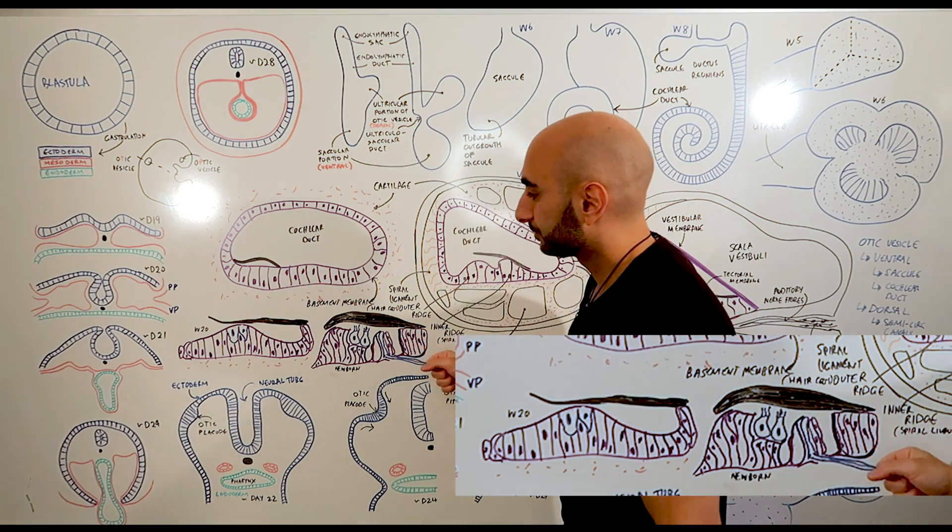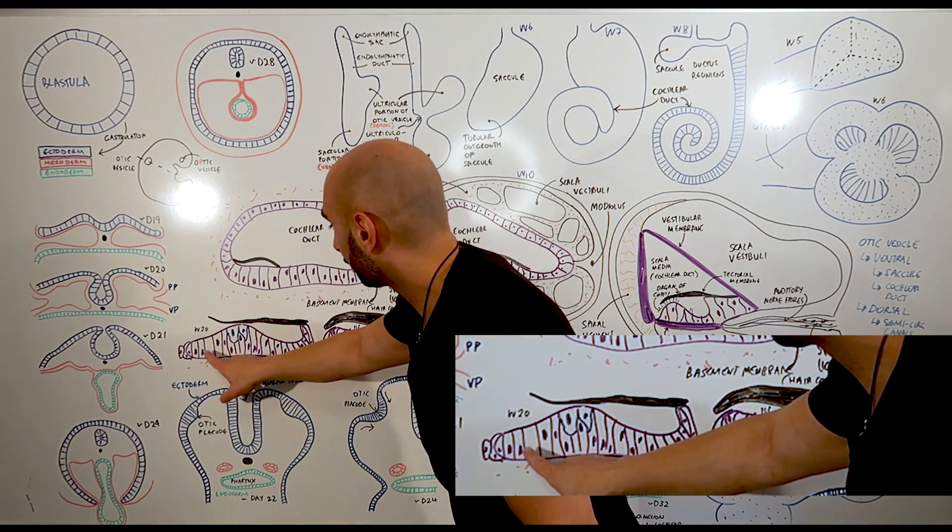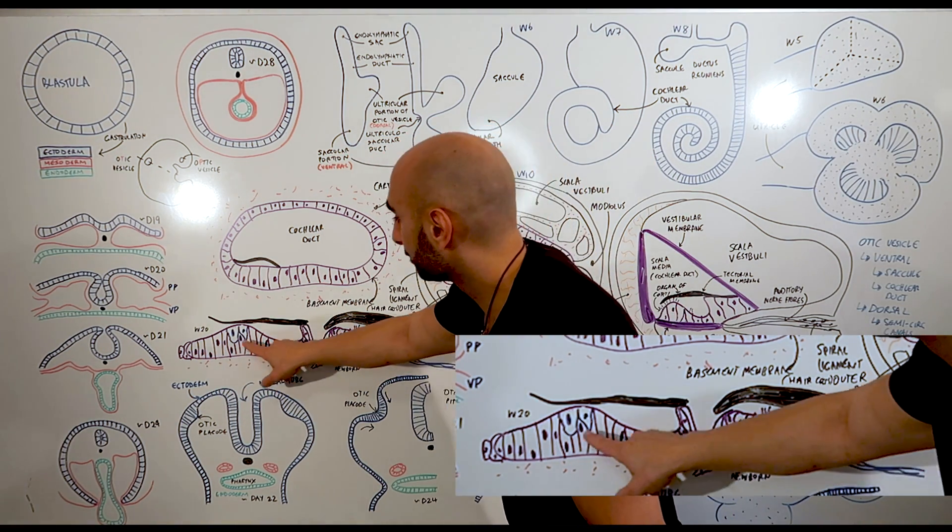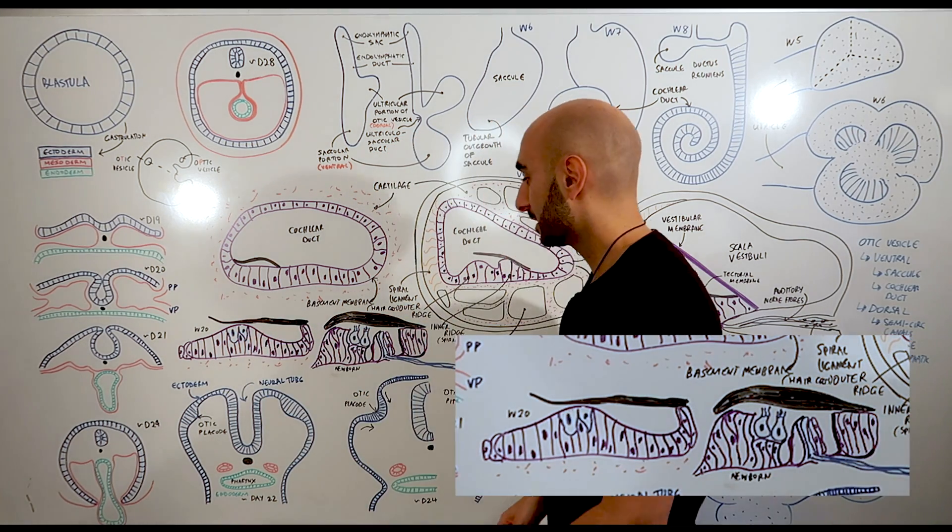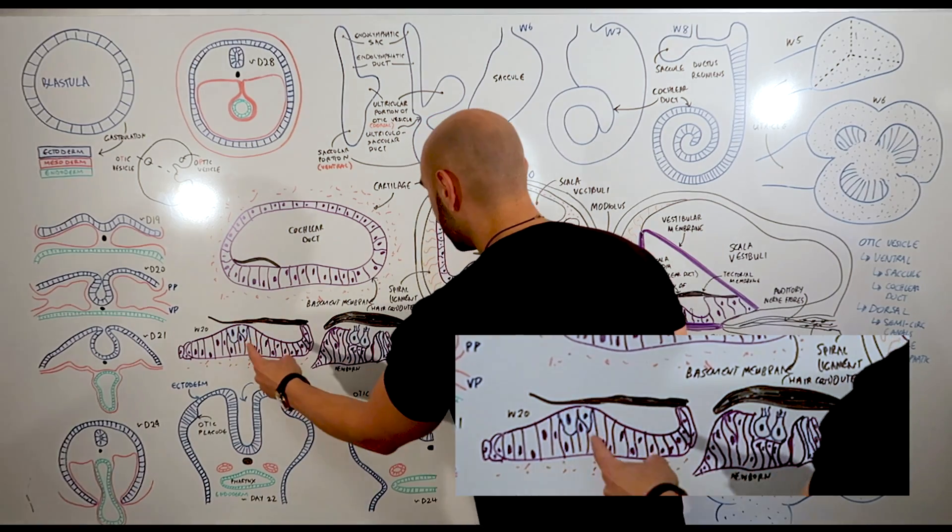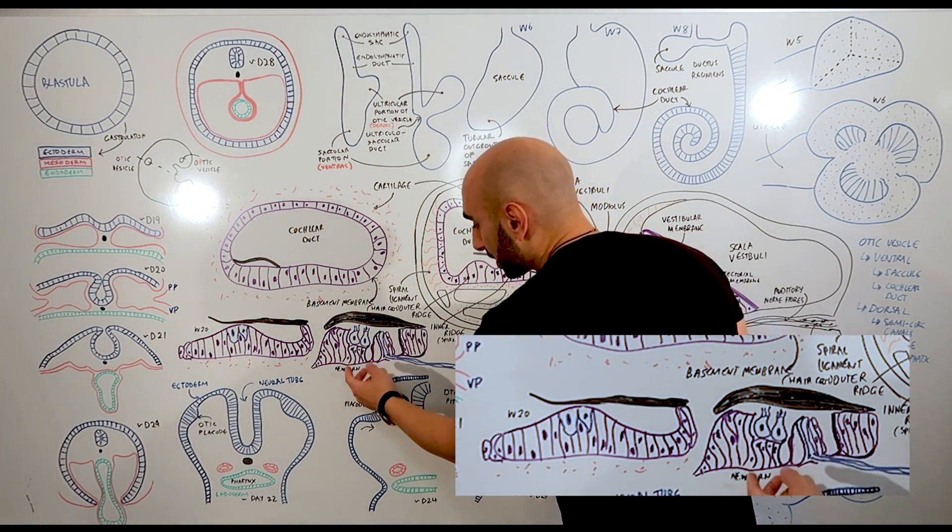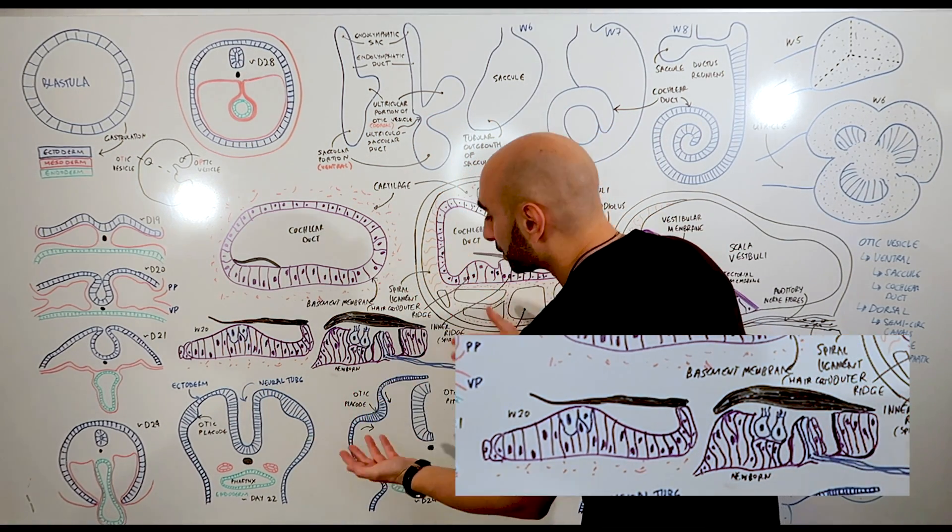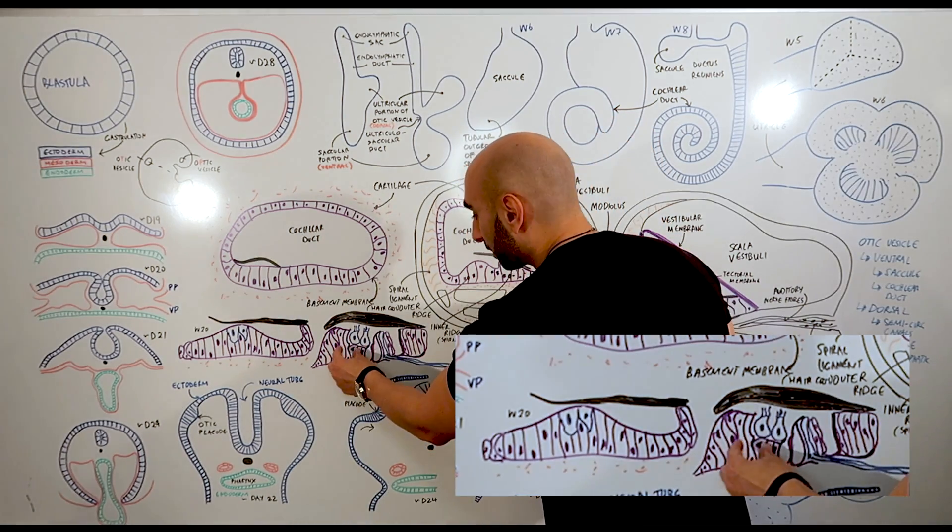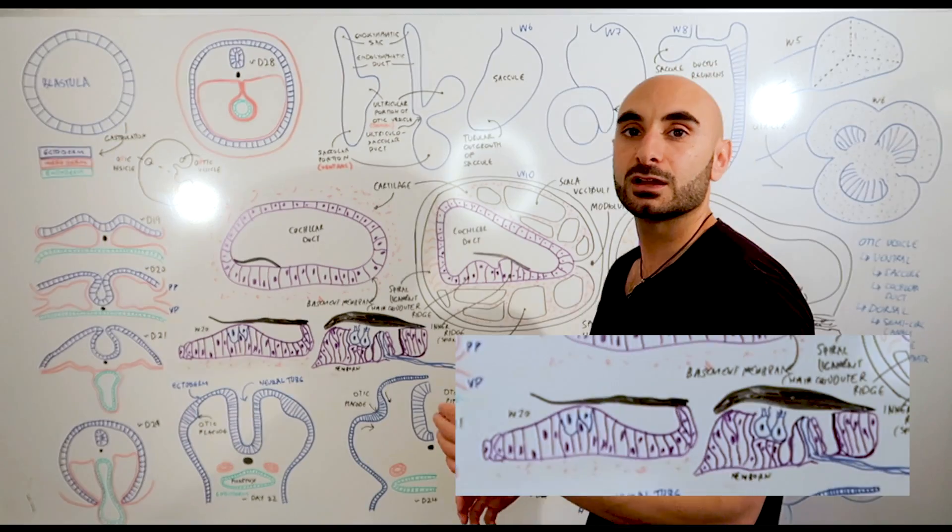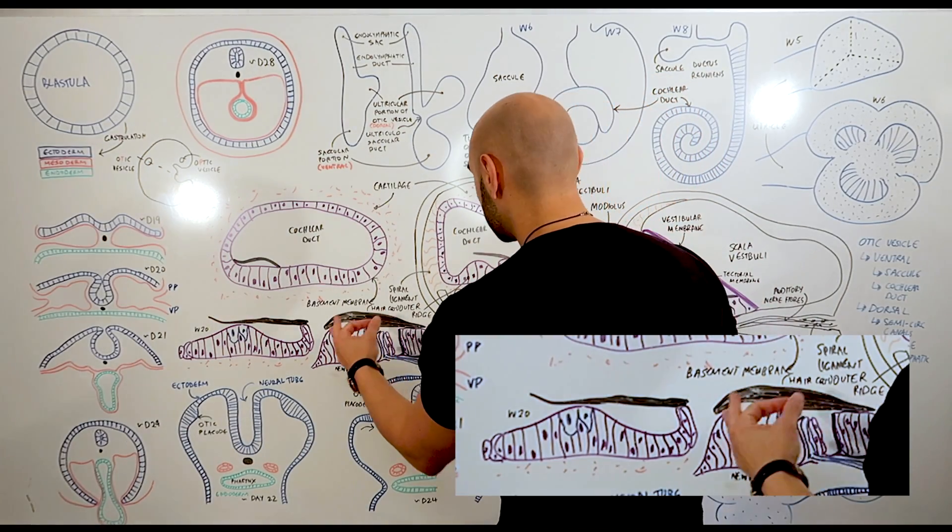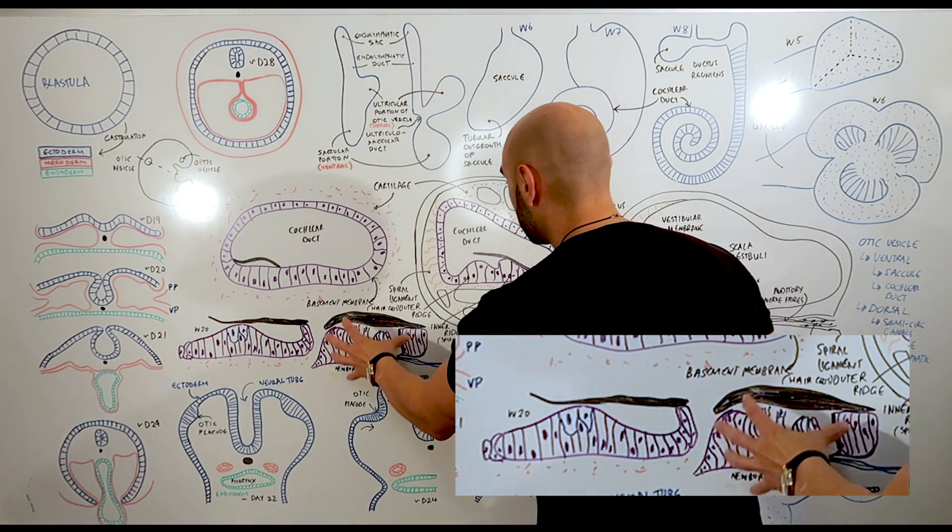This over here are the undifferentiated cells, and in blue we have the first sign of the hair cells - those are going to be the sensory cells. And this is just in the newborn what the organ of Corti looks like. You have your three or four layers of outer hair cells and a single layer of inner hair cells. And that is the sensory function of the inner ear.